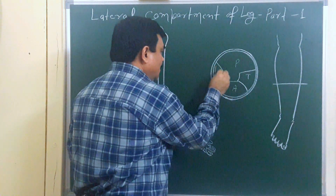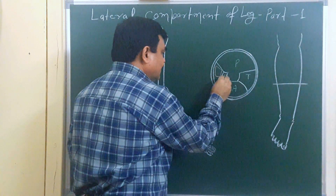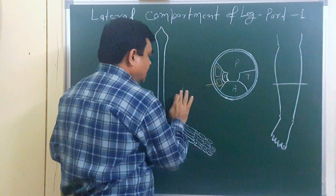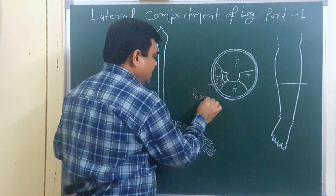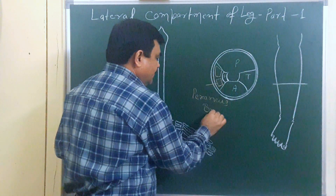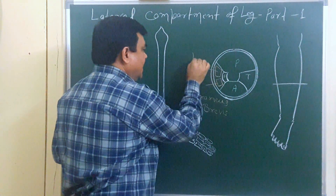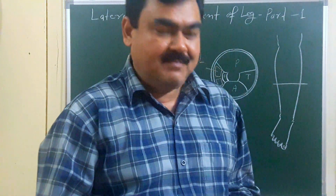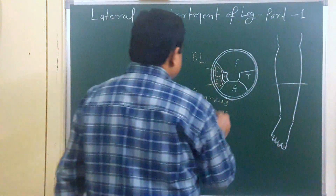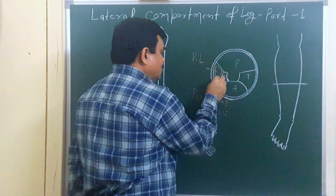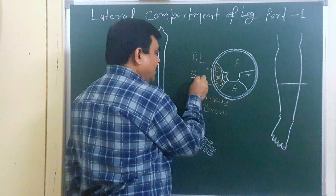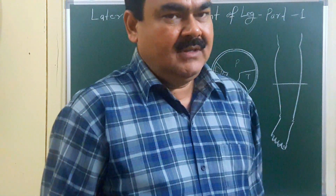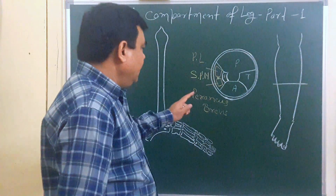The content of this compartment: here you will find two muscles present in this region. This is peroneus brevis and this is peroneus longus. These are the two muscles present in the lateral compartment. The nerve of this compartment is the superficial peroneal nerve, which is a branch of the common peroneal nerve.